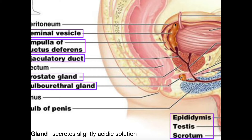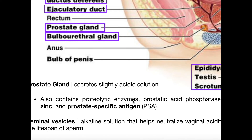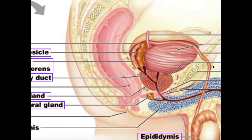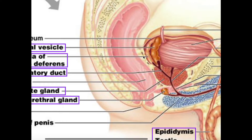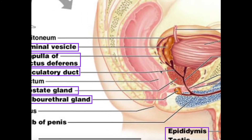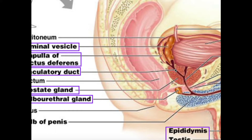As the ductus deferens loops around into the ampulla, on each side of the urinary bladder there's another structure — this is our first gland, called the seminal vesicle. There's a left and right for each. The sperm moving through the ductus deferens will enter a duct here and combine with the secretions of the seminal vesicle. Where these converge, we call this the ejaculatory duct — the convergence point between the ductus deferens ampulla and the seminal vesicle, where secretions from both combine.